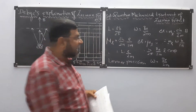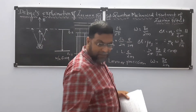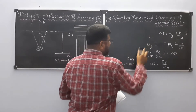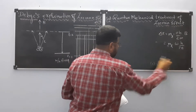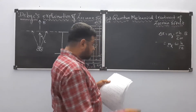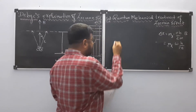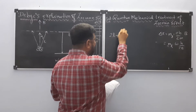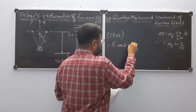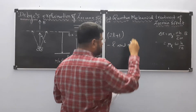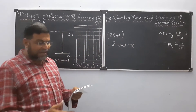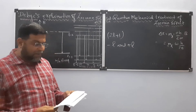Now, ML can have 2L + 1 values because in quantum mechanics we have 2L+1, 2S+1, and 2N+1 values. ML ranges between −L to +L. That is the range of the precession quantum number.